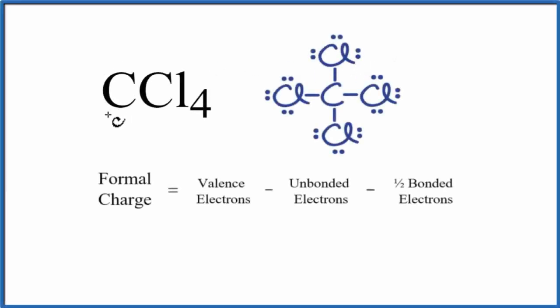To find the formal charge for each element in CCl4, that's carbon tetrachloride, we have the Lewis structure here and this formula. So let's do this chlorine atom right here first.